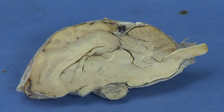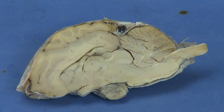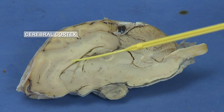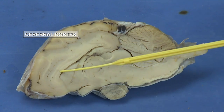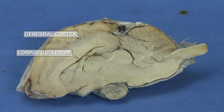If we cut the brain into two identical left and right halves, we will have a mid-sagittal view as seen on this screen. I will point to several structures. First, I will point to the cerebral cortex. This structure beneath the cerebral cortex is called the corpus callosum, which is a structure that connects the two halves of the brain.